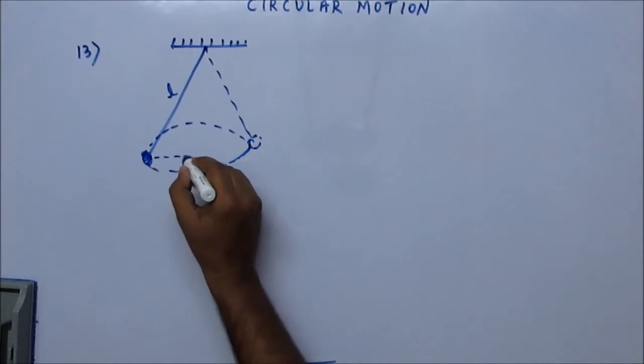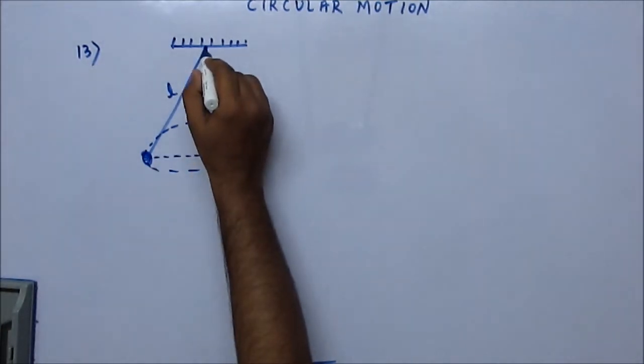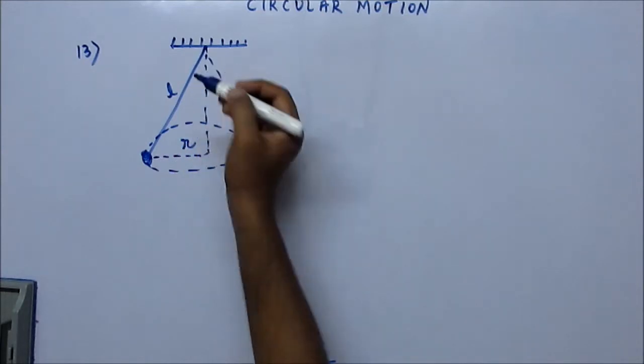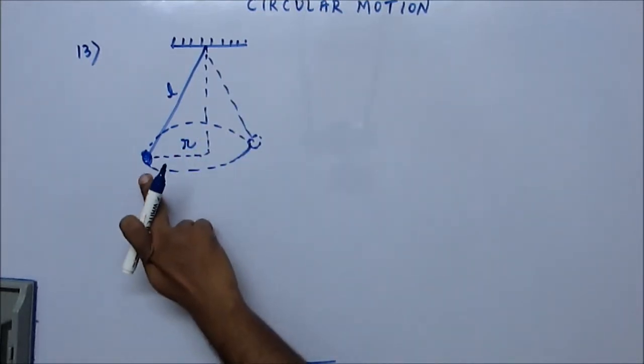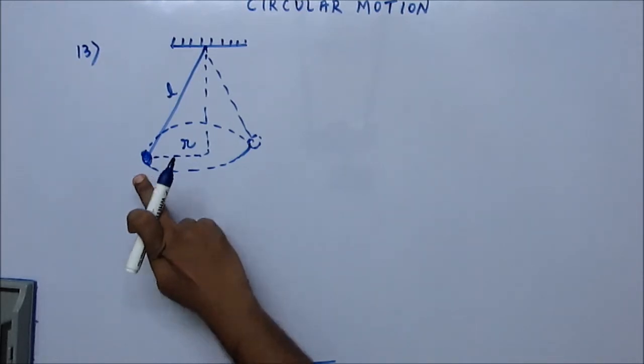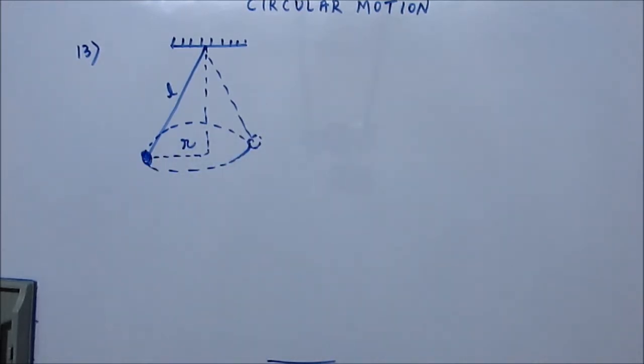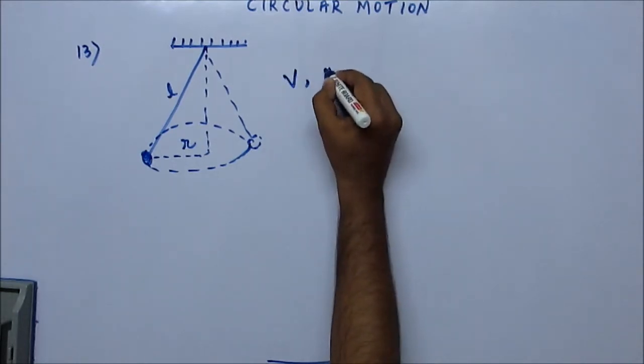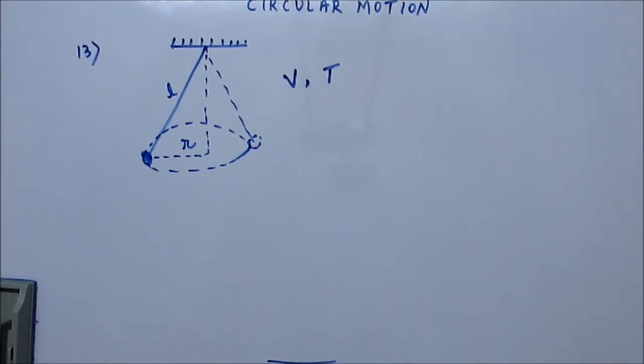The radius of this horizontal circle is R. Now the question is: if the bob of the pendulum is undergoing uniform circular motion, then find the velocity of the bob and the tension in the string. There's nothing new—you just have to use the formula for centripetal force. That's it.